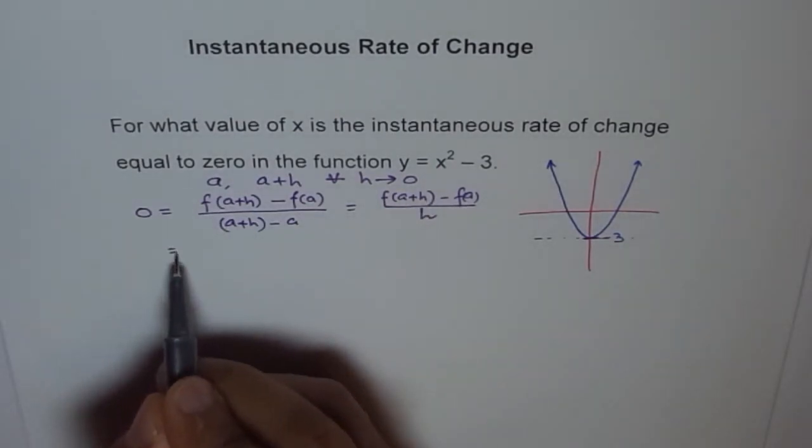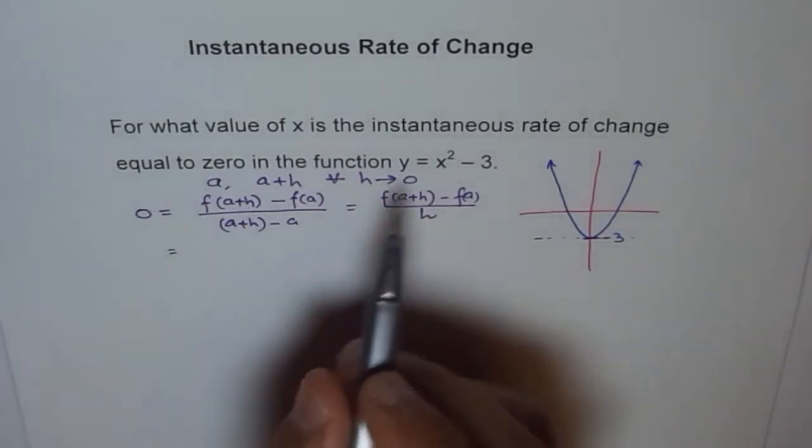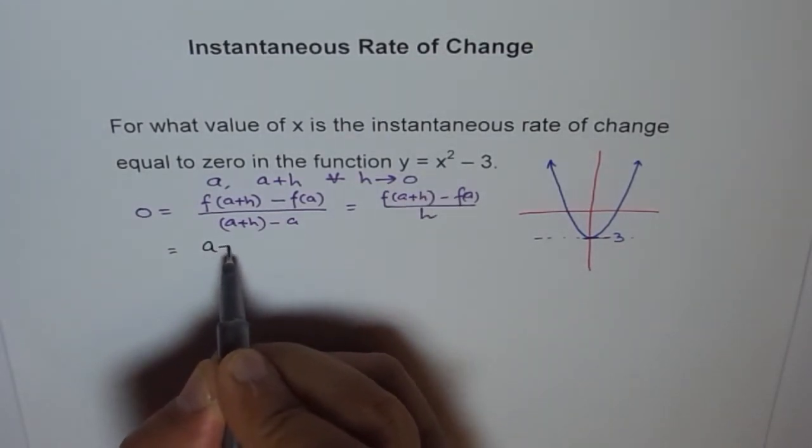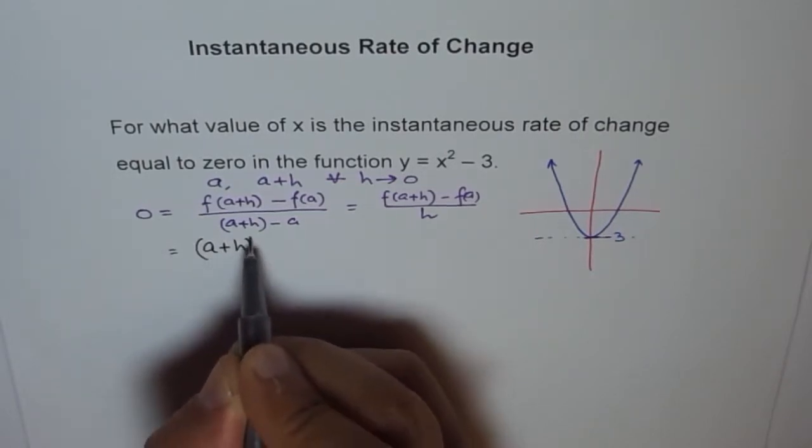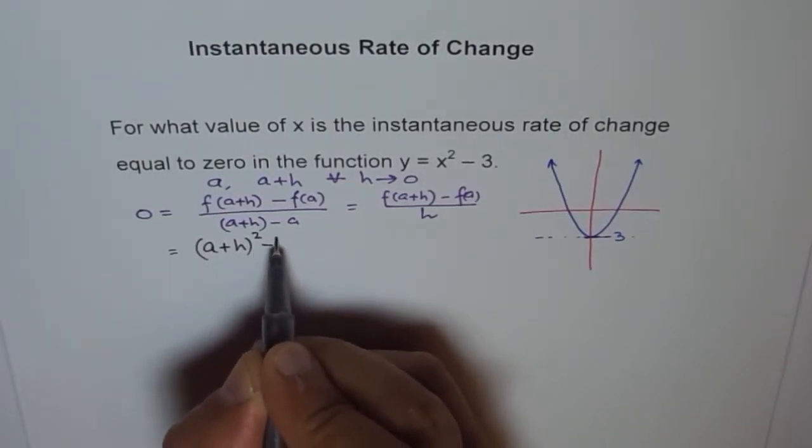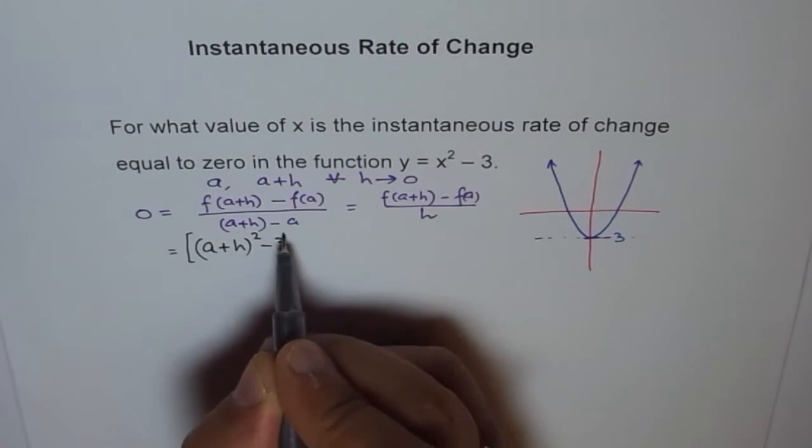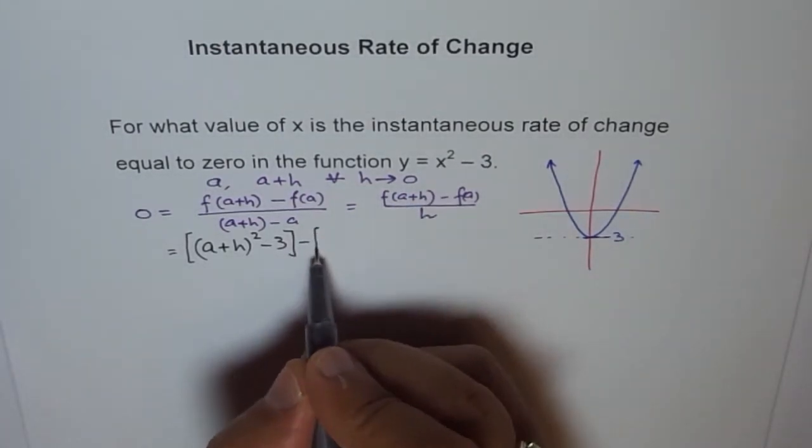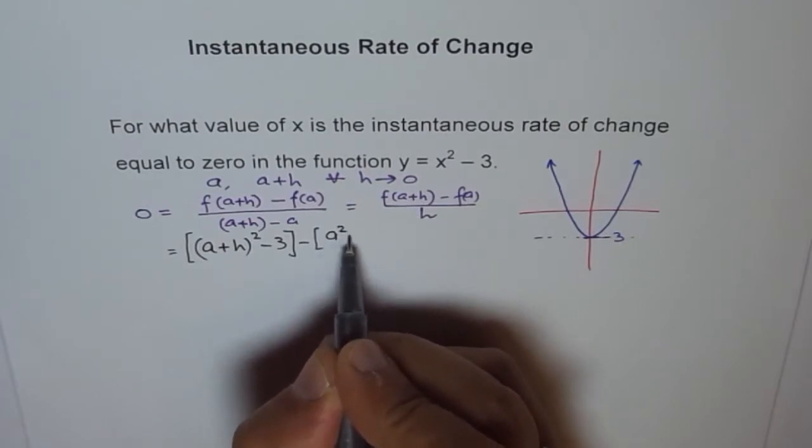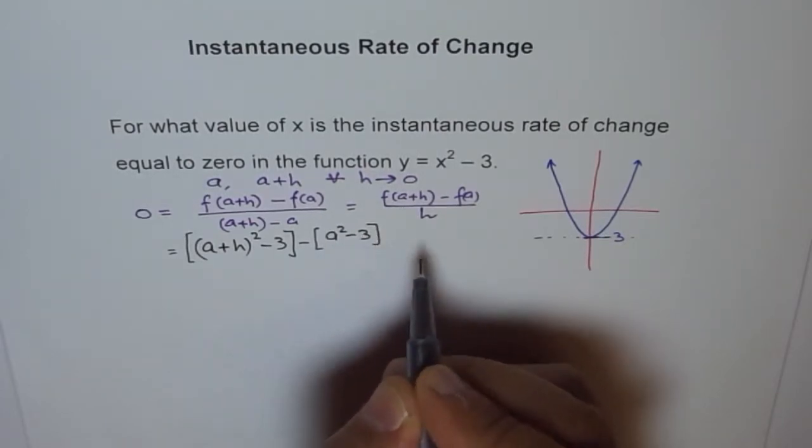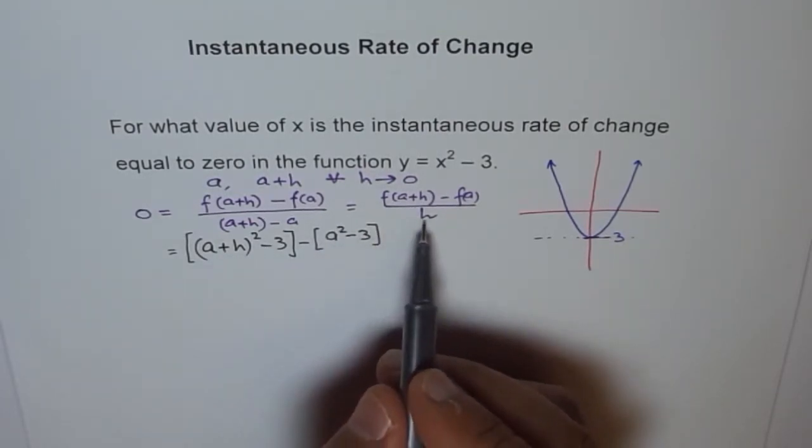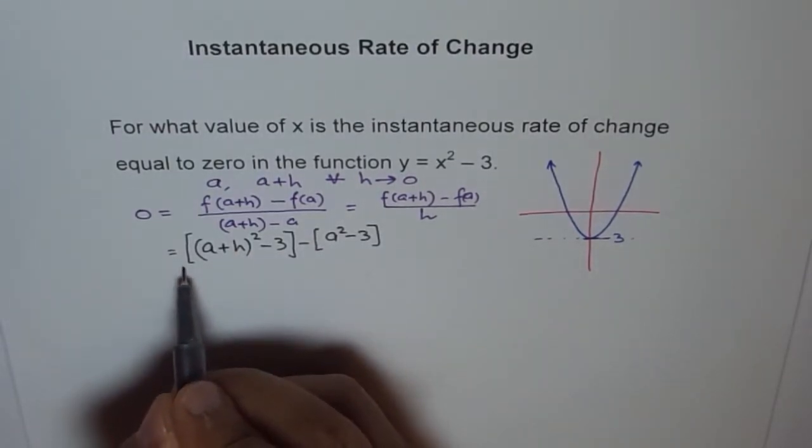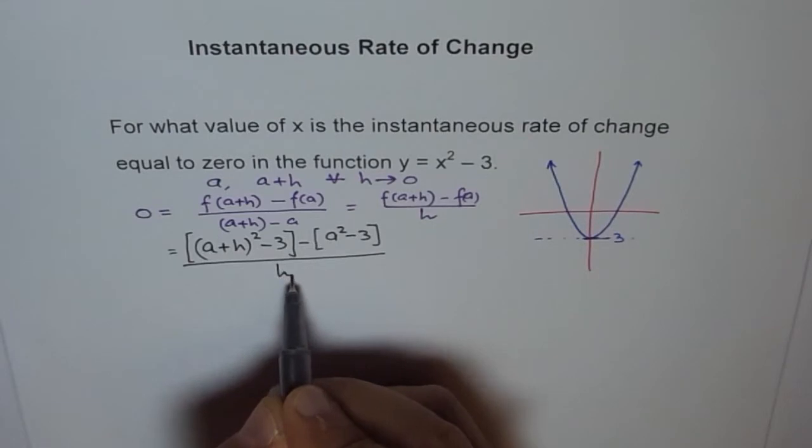Now, here, what is f of A plus H? That means we'll replace X with A plus H here. So we get here A plus H whole square minus 3. This is my f of A plus H. Minus f of A is I'll plug in A here. So I get A square minus 3. So, and this thing is divided by H. So let me divide this by H.